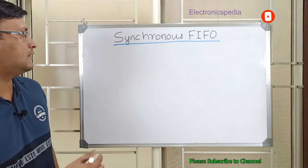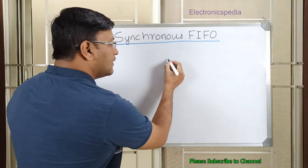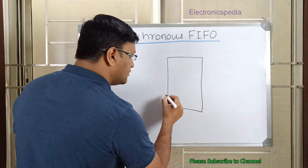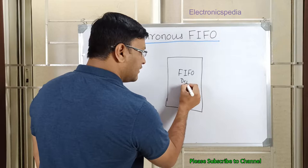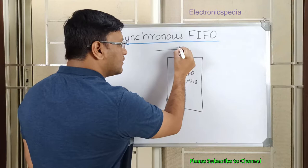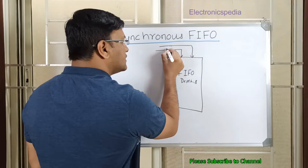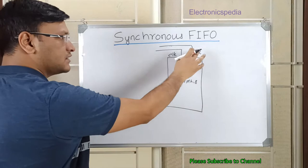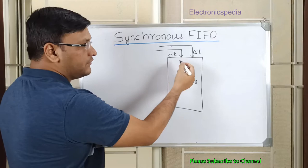In a synchronous FIFO, both the read clock and the write clock work on the same domain. Consider a FIFO with a depth of 8, meaning it has 8 locations. Since the write clock and read clock are the same frequency and the same domain, there will be only one clock fed to the FIFO. This is how the synchronous FIFO works.